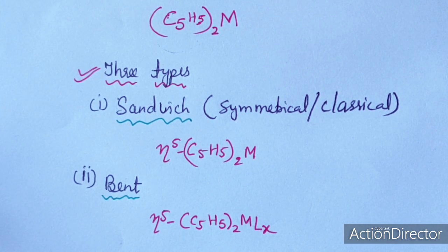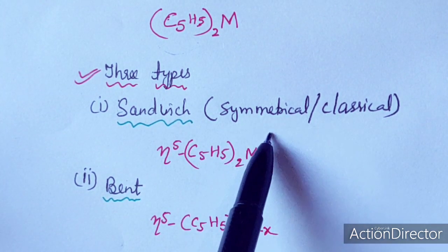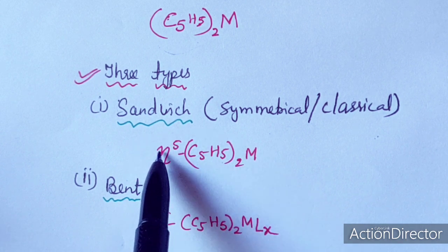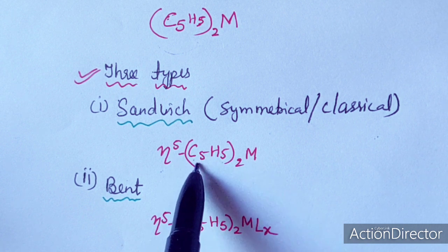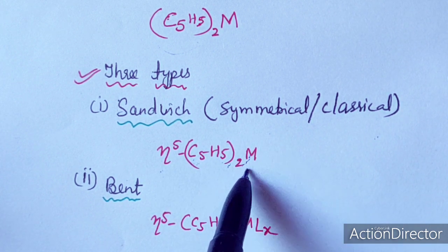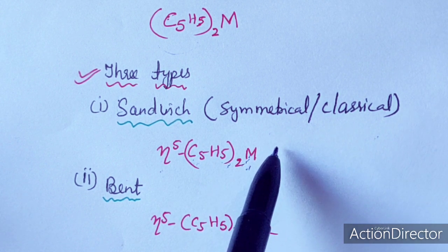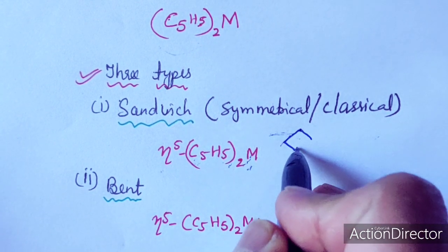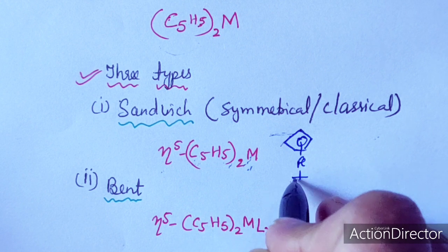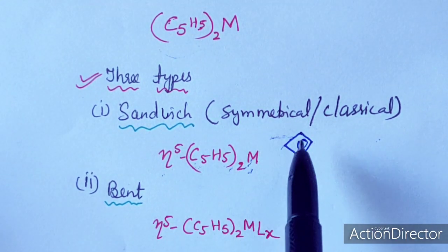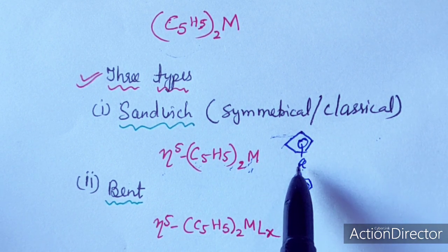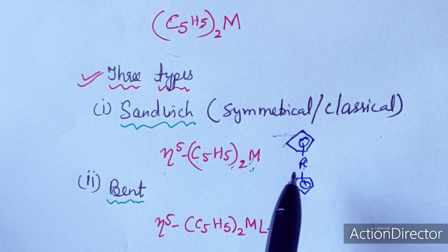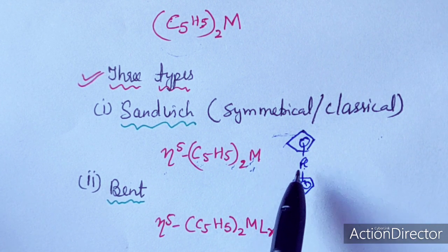Metallocenes can be of three types. The first is sandwich type, also known as symmetrical or classical type, where C5H5 has hapticity of 5 — eta-5 — with all five carbon atoms attached to the metal center. Ferrocene is a classic example, where two cyclopentadienyl rings, one from above and one from below, form the sandwich structure around iron. The metal gives the name of the metallocene, so it may be chromocene, ferrocene, or titanocene.